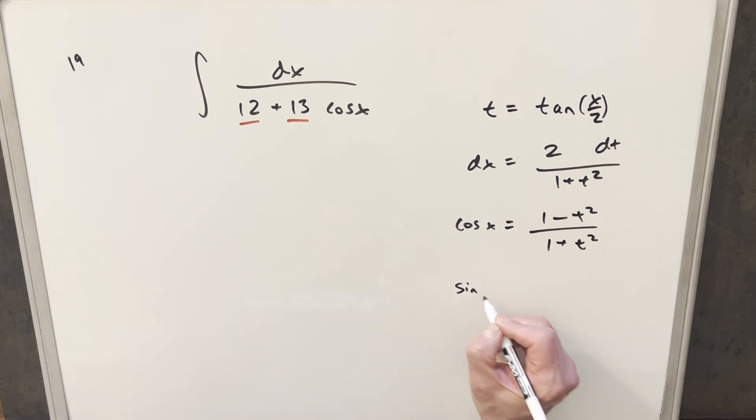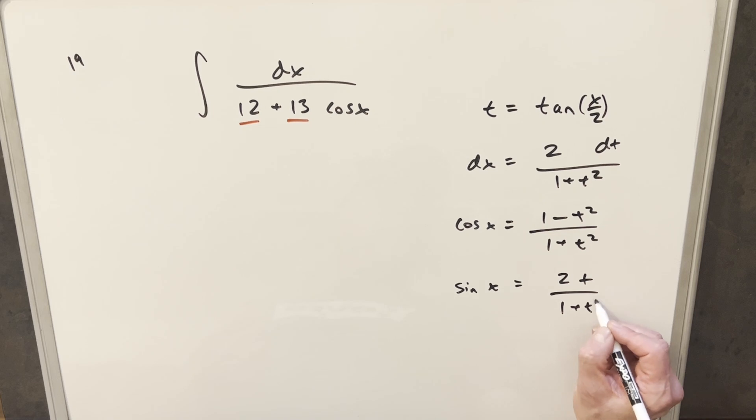We also found a value for sine x. We don't really need it here, but our value for sine x was 2t over 1 plus t squared. Okay, so let's just go ahead with this substitution now.